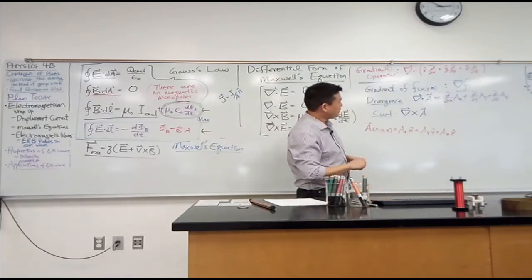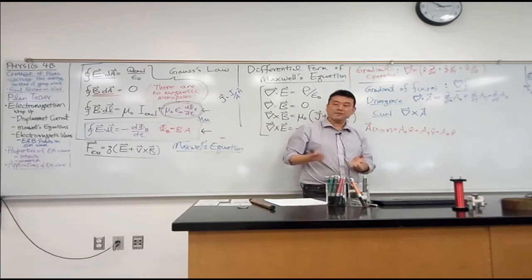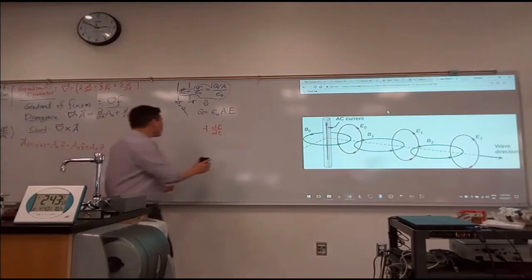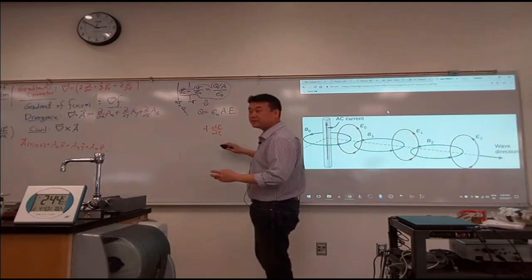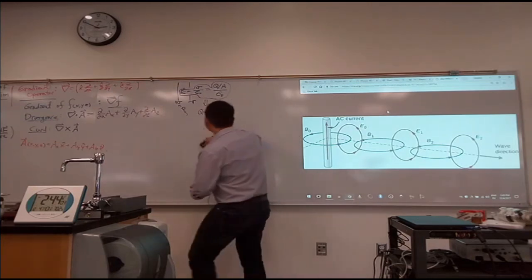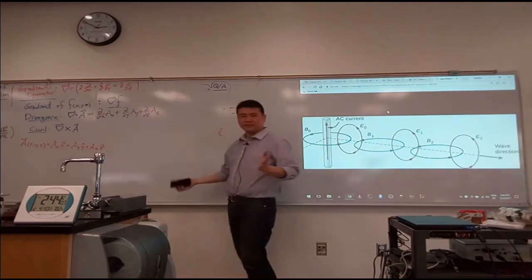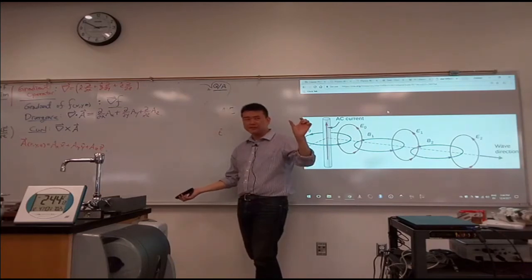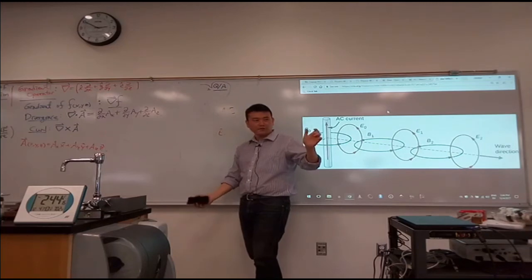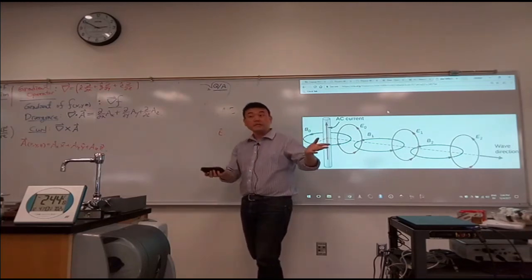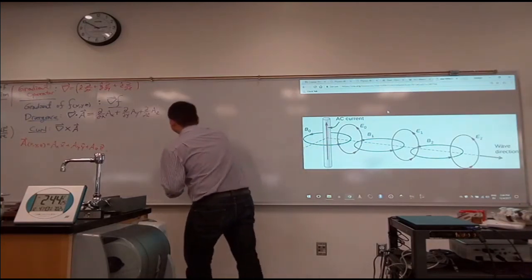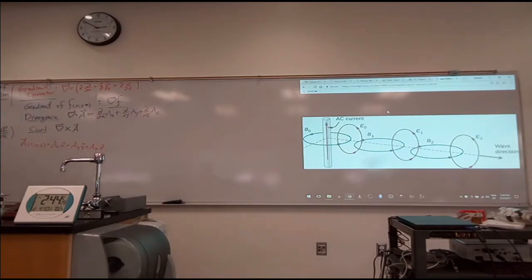Do people here remember the component representation of cross product? Let me give you a shortcut to memorize it. How many of you have taken linear algebra? When you take a cross product A cross B, this can be represented as the determinant of a made-up 3 by 3 matrix.